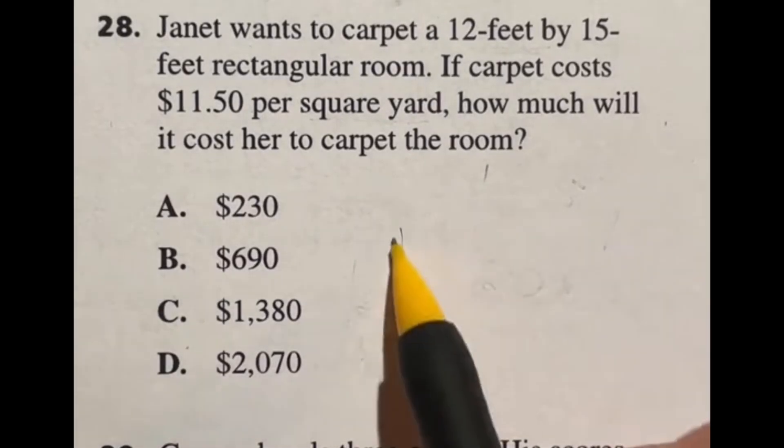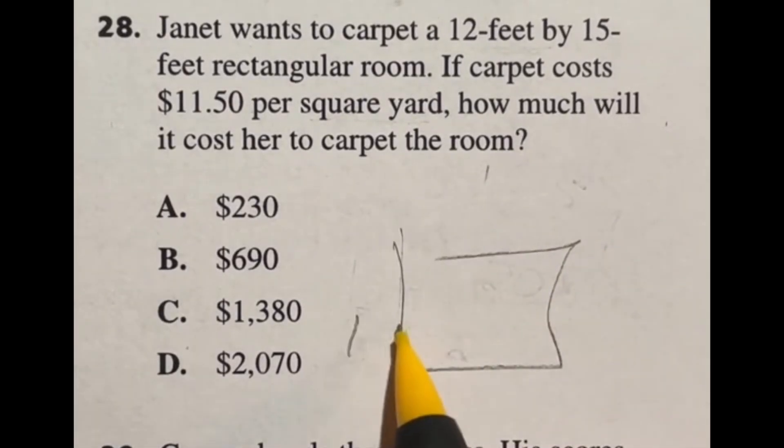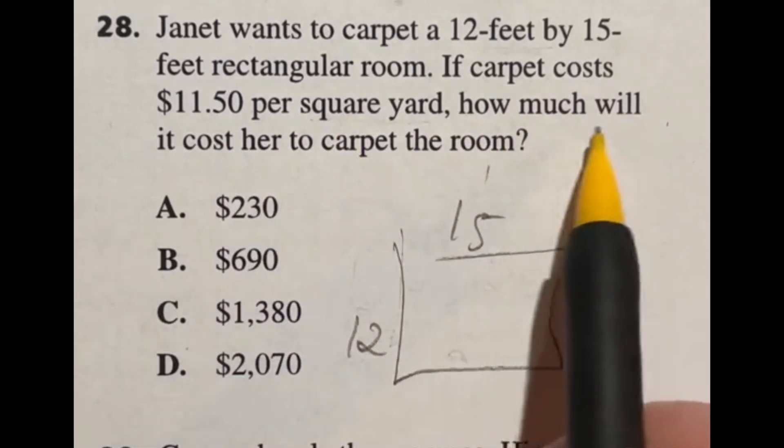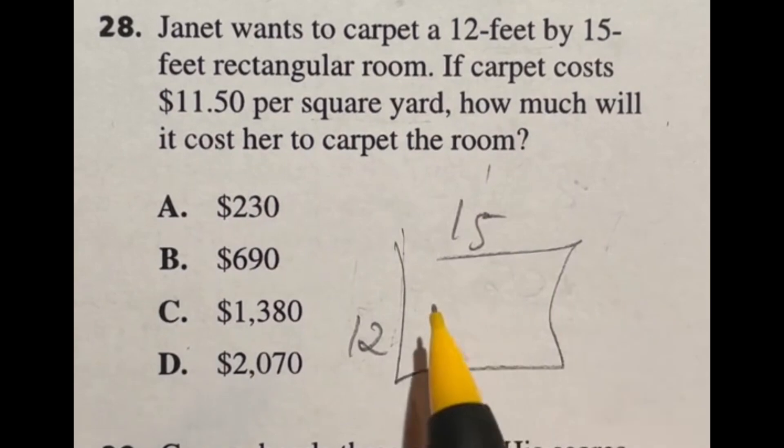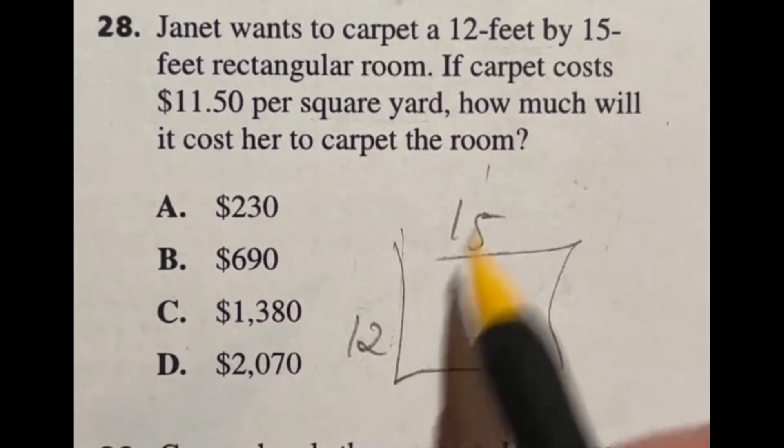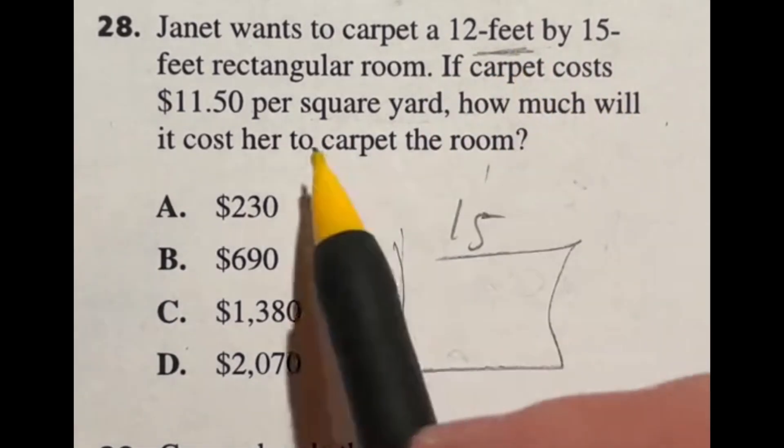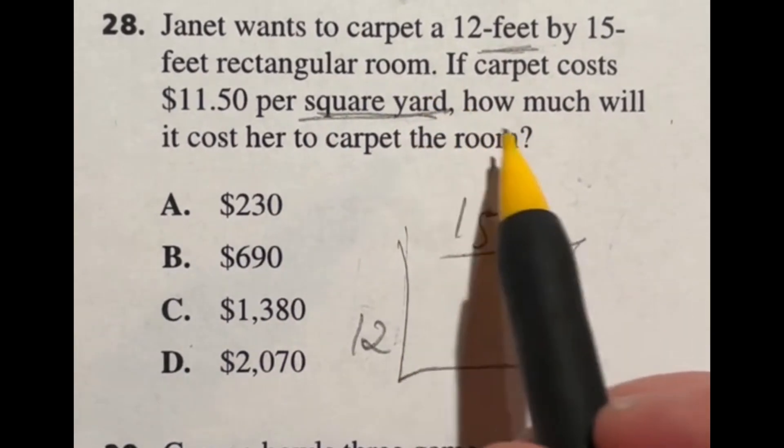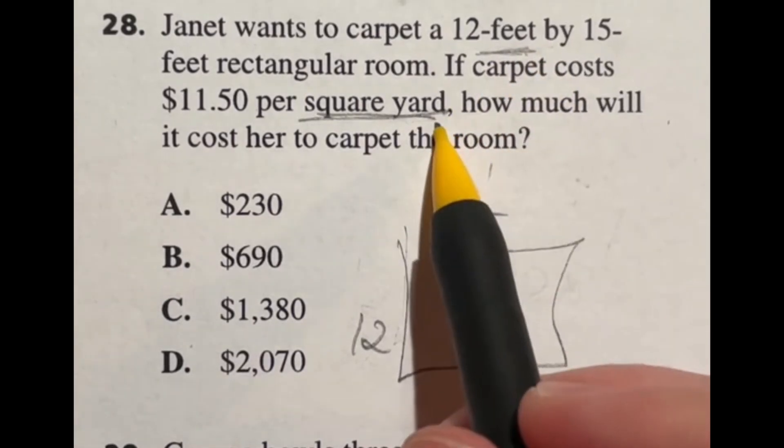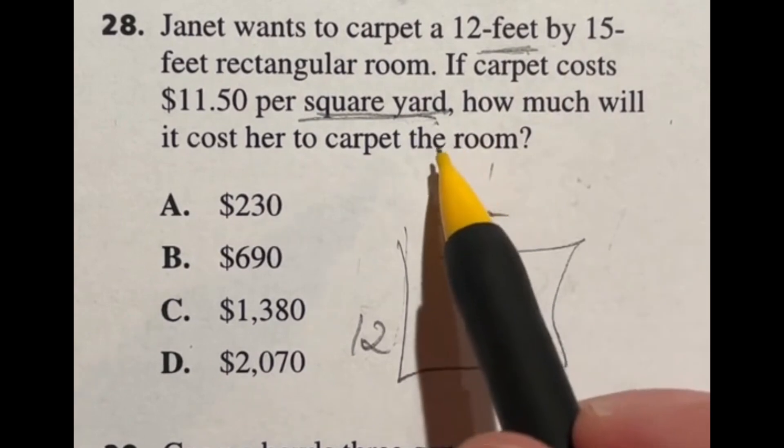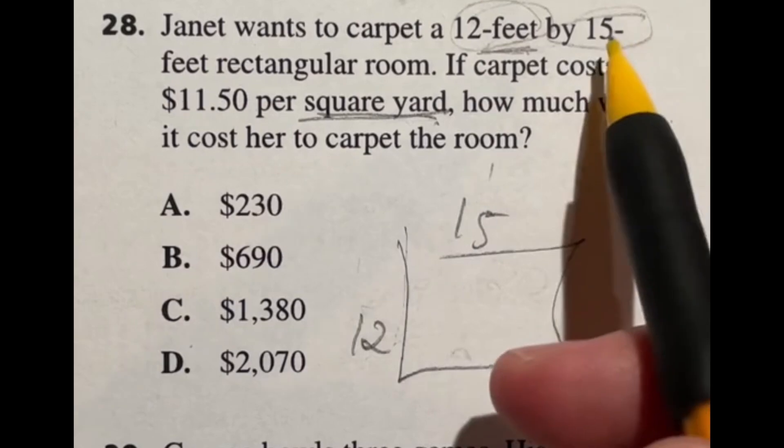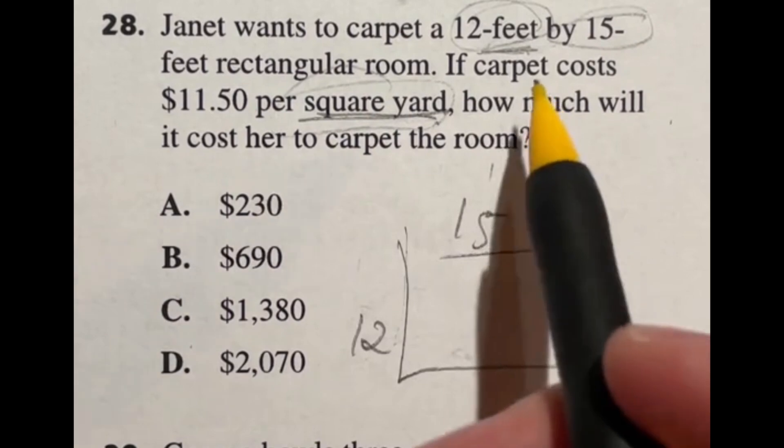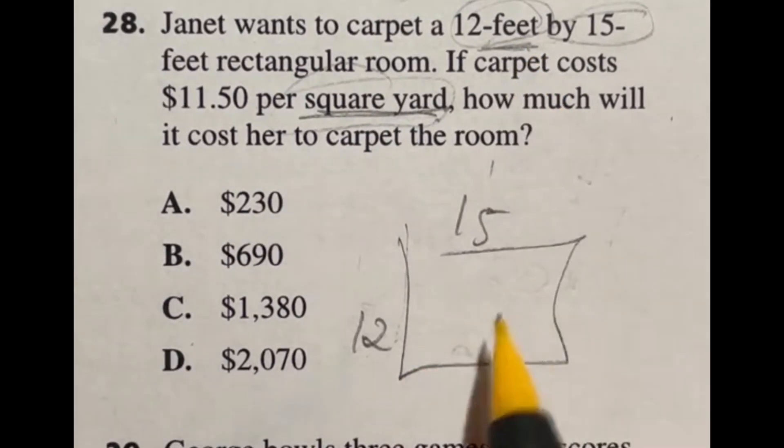Number 28. Janet wants to carpet a 12 by 15 feet rectangular room. If the carpet costs $11.50 per square yard, how much will it cost her to carpet the room? Here's why everyone's getting this wrong. Notice it says 12 by 15 feet and just like the ASVAB likes to do, this says yards. You have to catch that it says feet and catch that it says yard and make sure you convert. You can do that in the beginning by converting to yards or at the end. I think it's easier to deal with it up front.